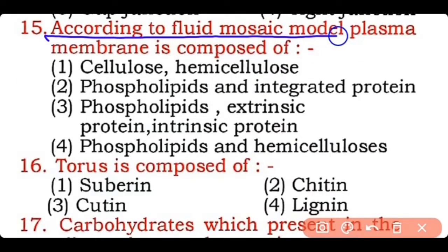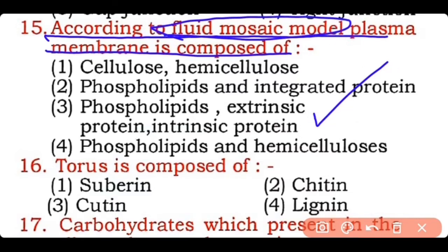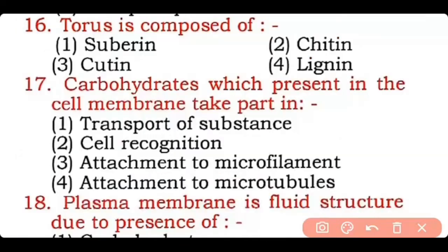Question 15: According to the fluid mosaic model, the plasma membrane is composed of — cellulose and hemicellulose, phospholipid and integrated protein, phospholipid with extrinsic and intrinsic protein, or phospholipid and hemicellulose? Correct answer is option three — the plasma membrane is composed of phospholipids, extrinsic protein, as well as intrinsic protein.